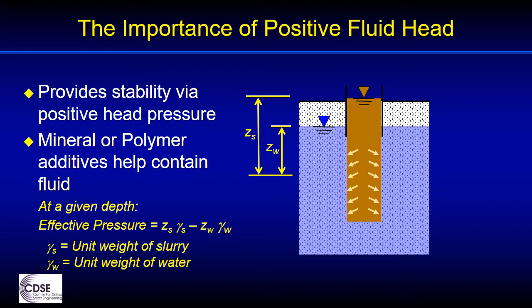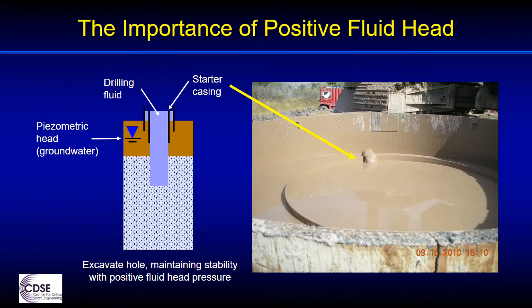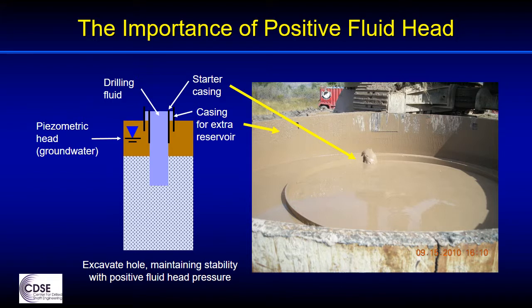A surface casing is typically used to contain slurry and allow the hole to be filled to the proper level. The need to maintain positive fluid head can be a challenge and influence the construction methods when the groundwater is very shallow. As the excavation advances and the volume of the hole increases, it is necessary to continuously add slurry in order to maintain the positive head. An oversized second surface casing, like you see in this photo, may sometimes be added to provide a reservoir for extra fluid volume, so the level at the surface doesn't go down so much as the excavated soil comes out.